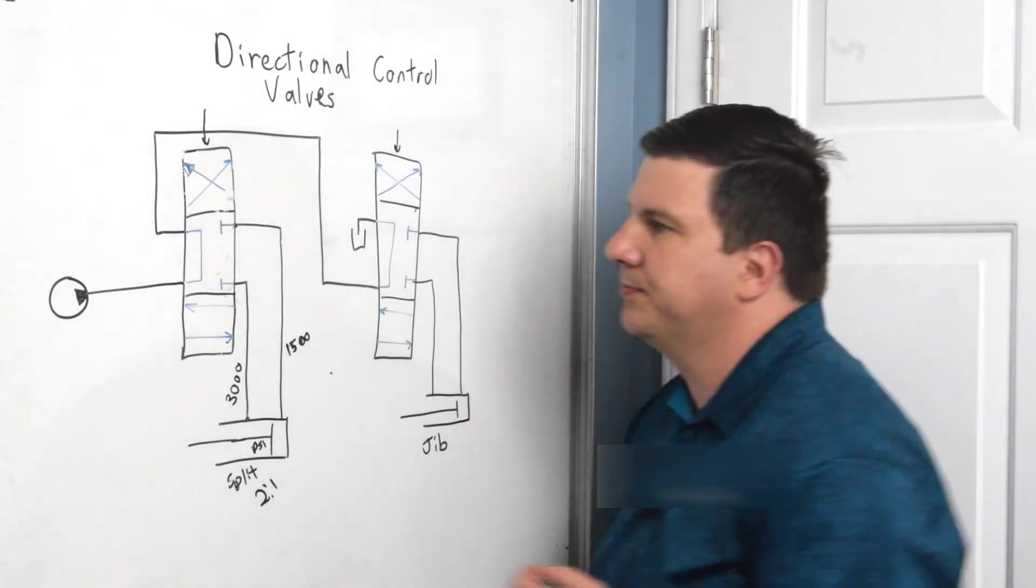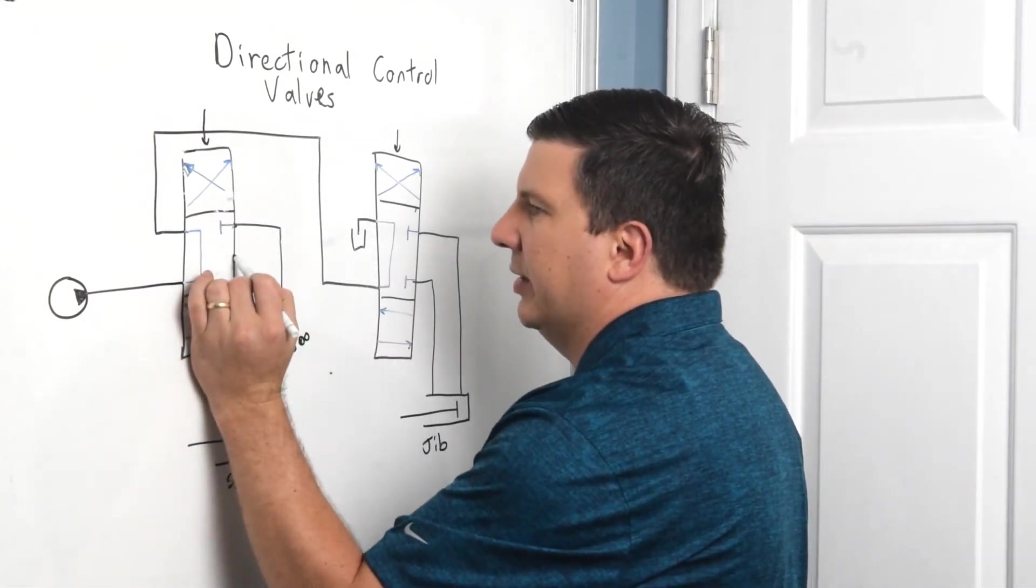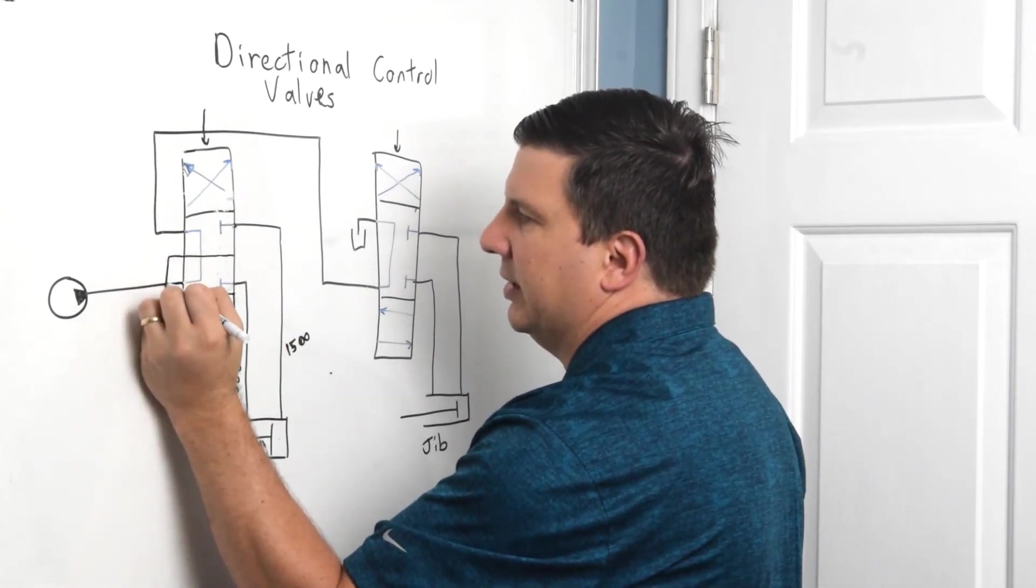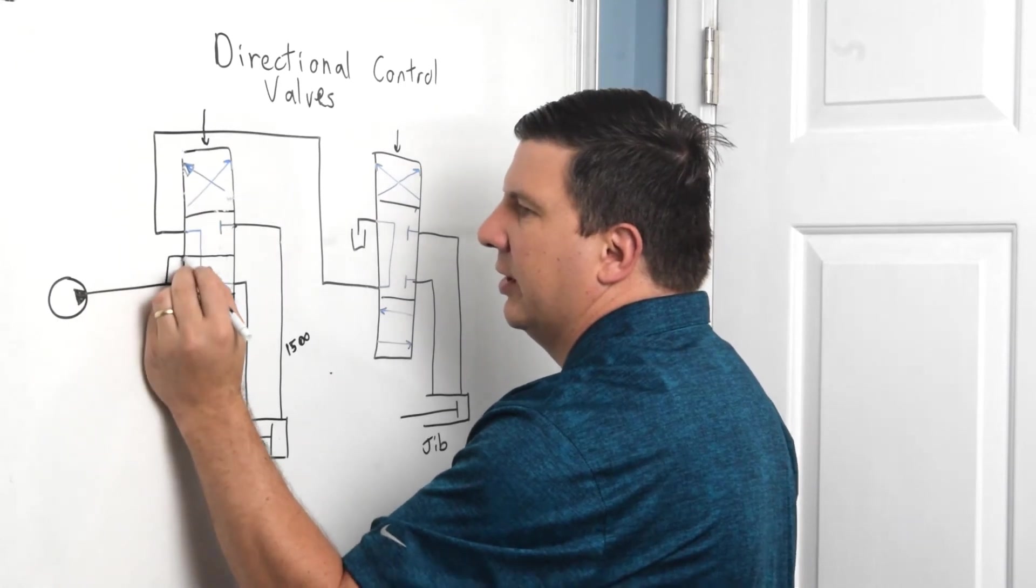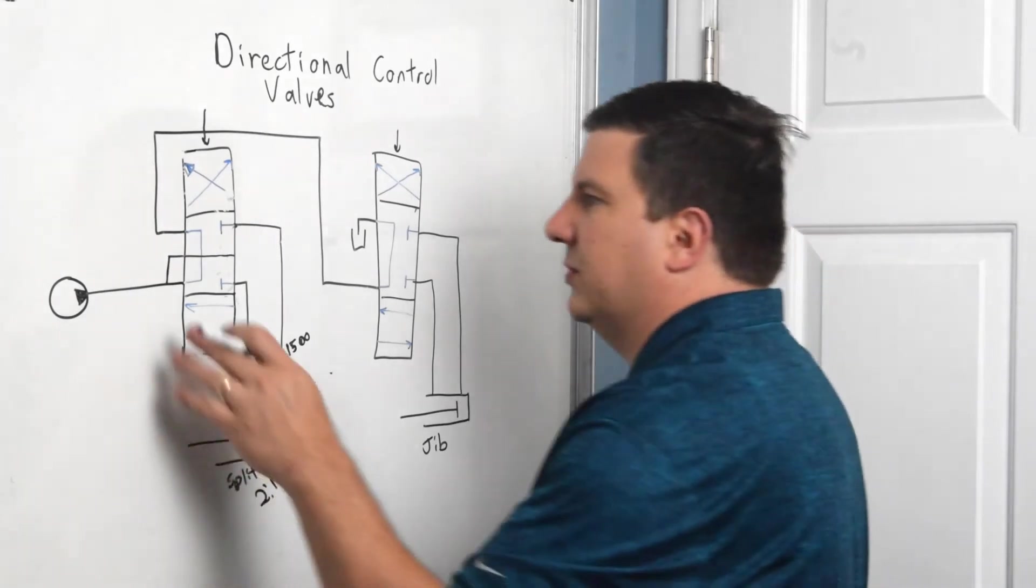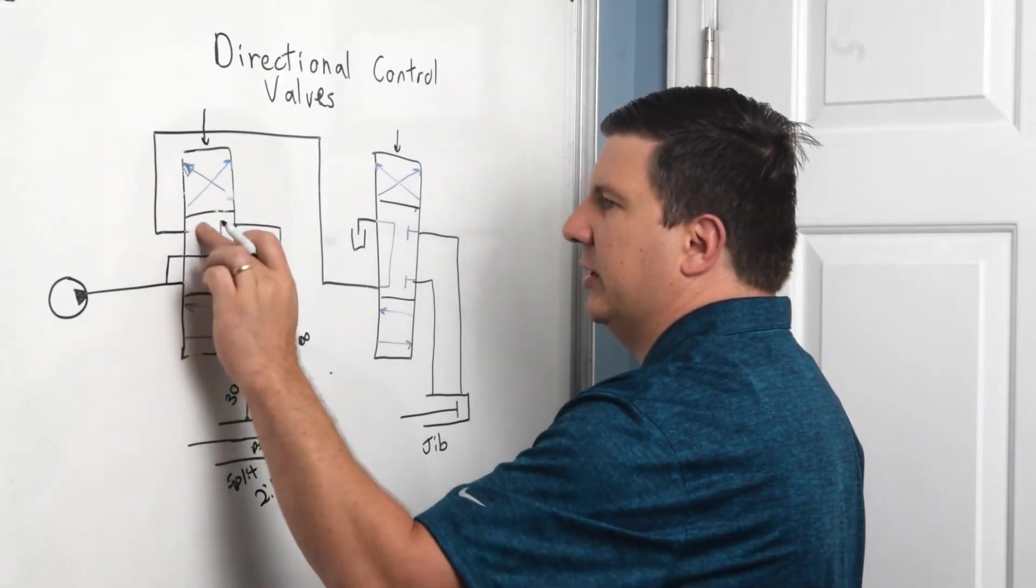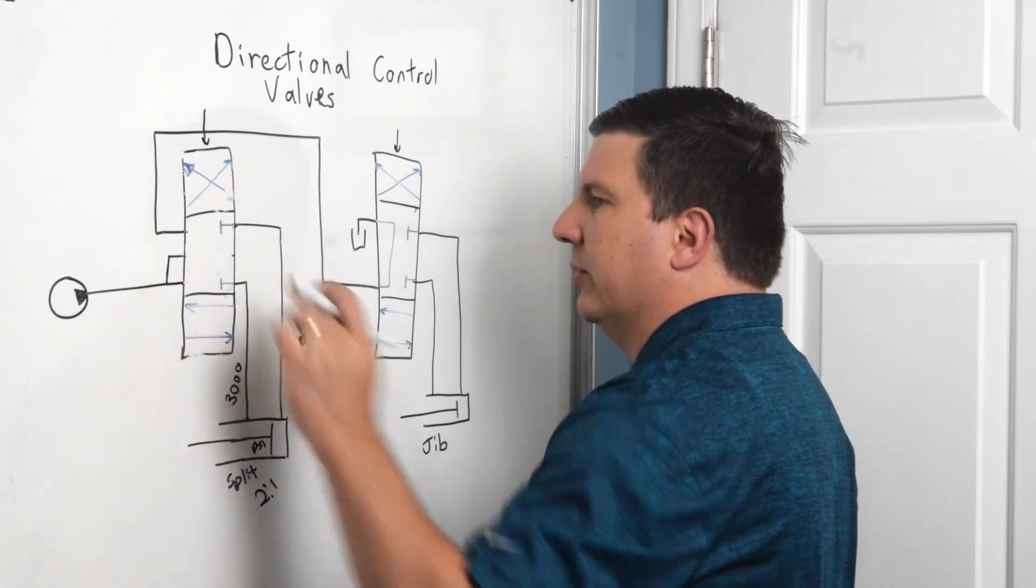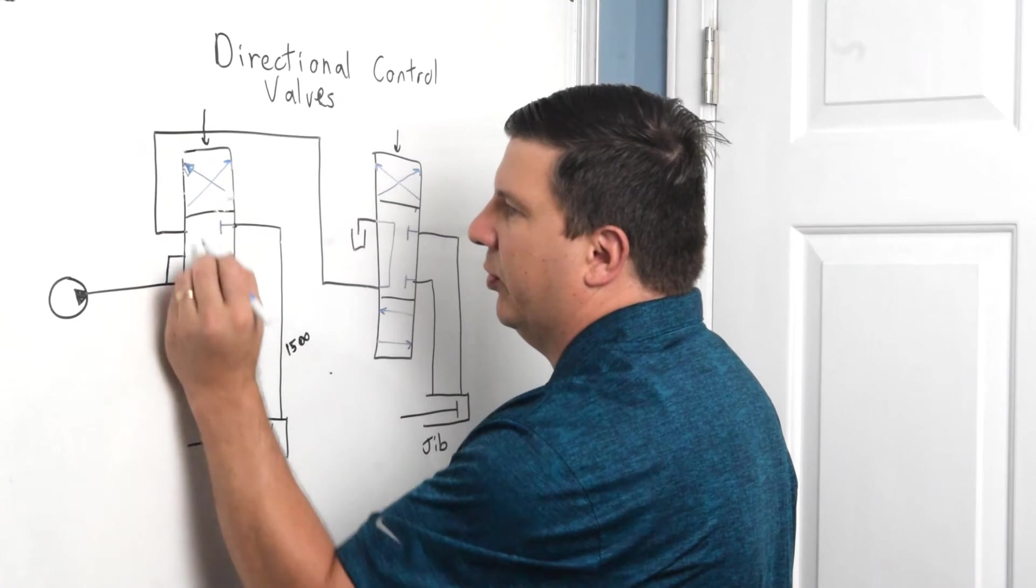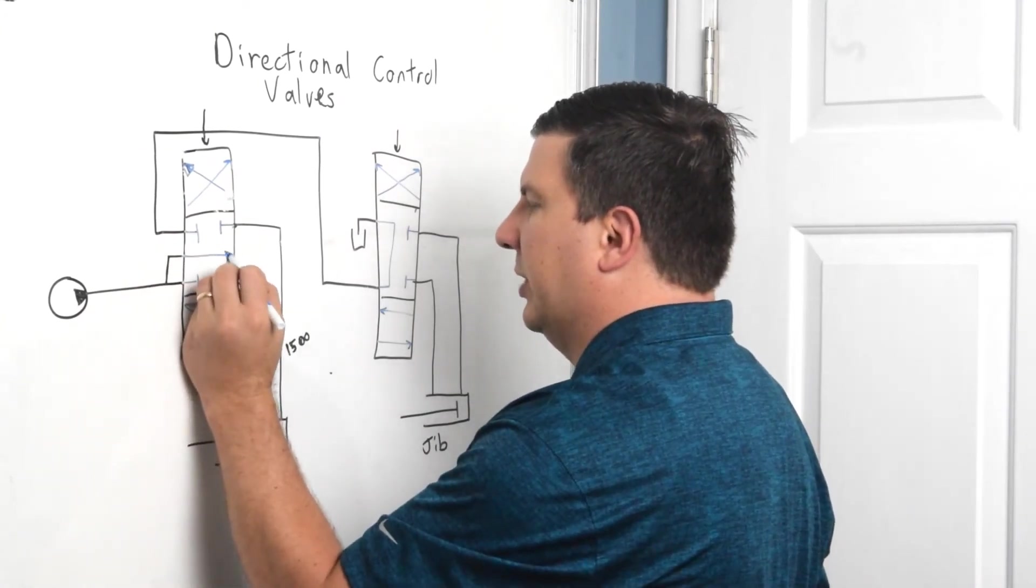So what we do want to do is we want to have the through center. And what that does is it allows me to take this oil. So I'm going to change this center here. Actually, I'm going to redo this whole thing. So what I do is I close off my pressure port and then I have one that just goes through and it always goes through.